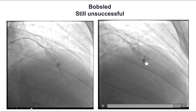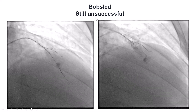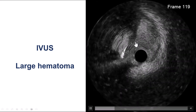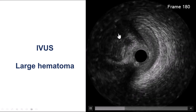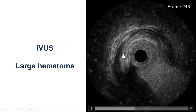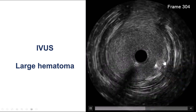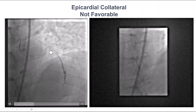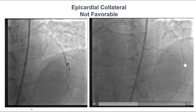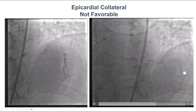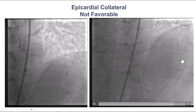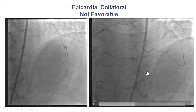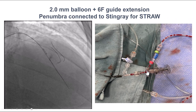We tried to re-enter at a different location using the so-called bobsled technique, which was unsuccessful. IVUS confirmed what we already knew: we had a large hematoma, with the diagonal visible at the proximal cap. We then decided to try the epicardial collateral; however, it was not as favorable as it appeared on the diagnostic angiogram, and we were unable to get through it.